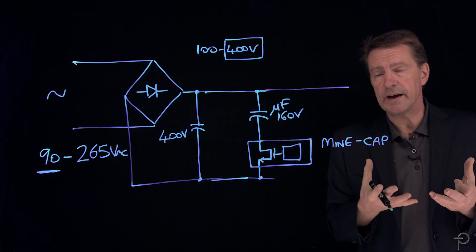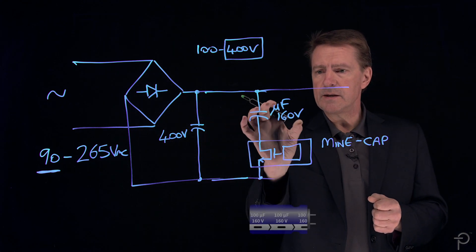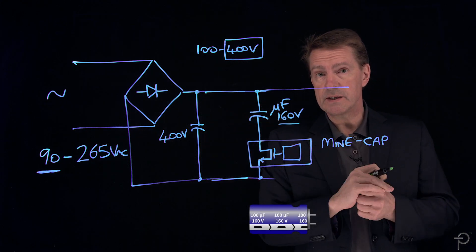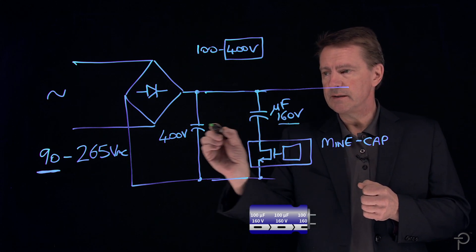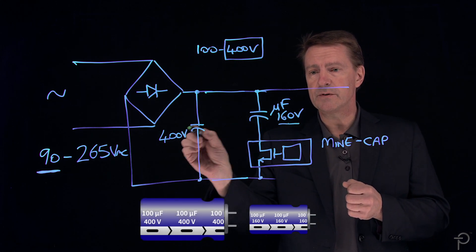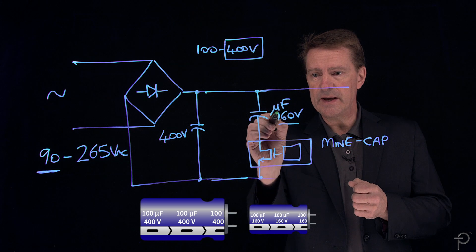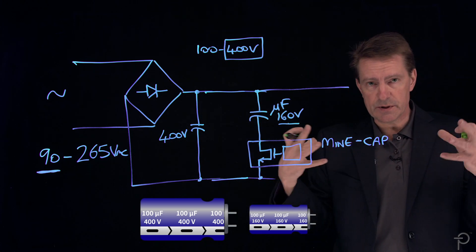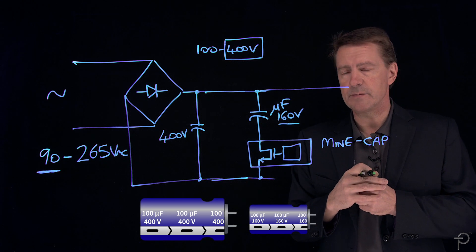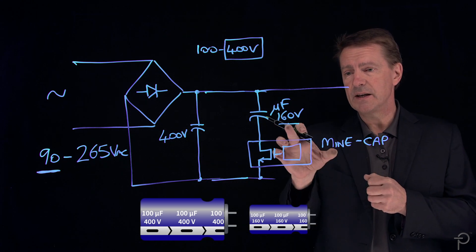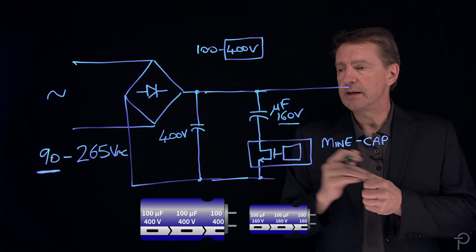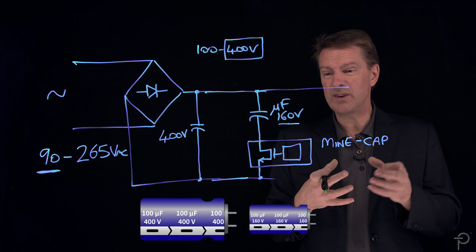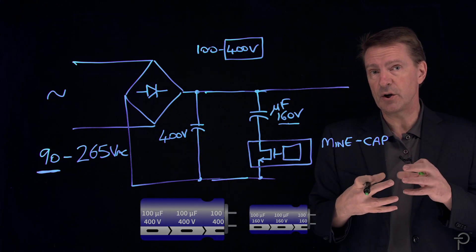So the beauty of that is that this capacitor, which is only rated for 160 volts, is dramatically smaller than the equivalent 400 volt capacitor for a given number of microfarads. And as a consequence, the input stage of the power supply shrinks. In actual fact, a 160 volt capacitor for the same value of microfarads as the 400 volt is roughly about a third of the size, third of the volume.